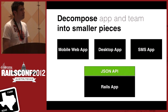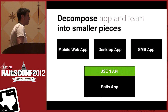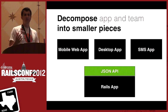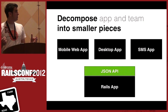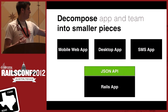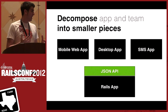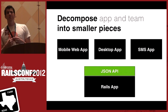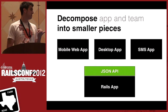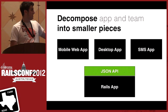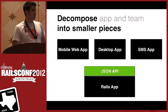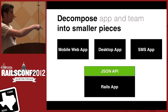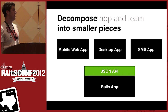Our approach, both from a technical and a team perspective, has been to break our application apart into smaller pieces. This is what the picture looks like for us today: we have a Rails app running our JSON API. We still have some view code rendering on our Rails server, but ultimately we're going to end up with all these little satellite applications talking to this JSON API.